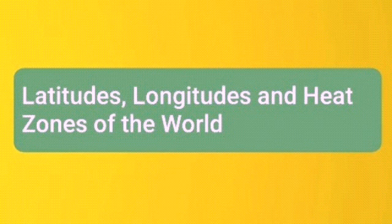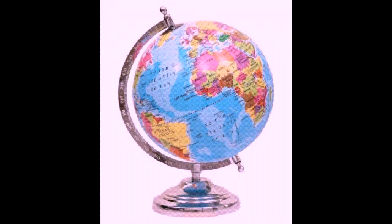To start with, I'm going to show you a picture and you have to tell me what the picture is about. Yes, what picture is this? You're correct — it is a globe. A globe is a spherical model of the earth, a small model of the earth.